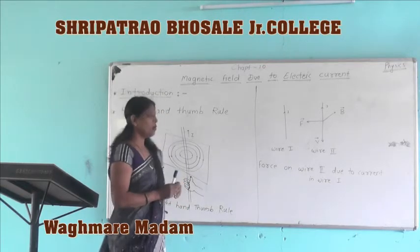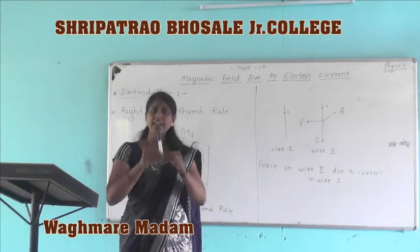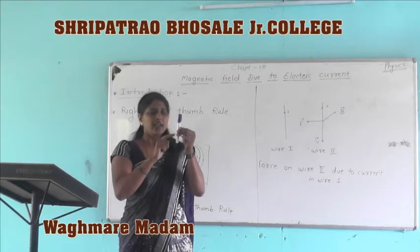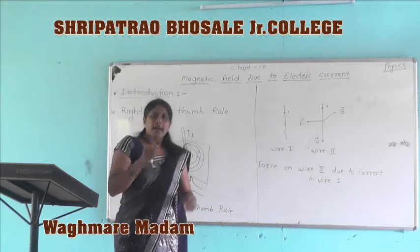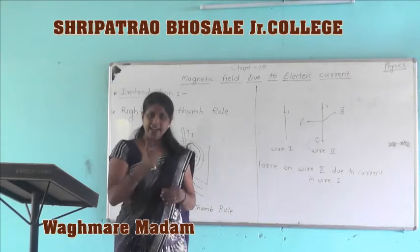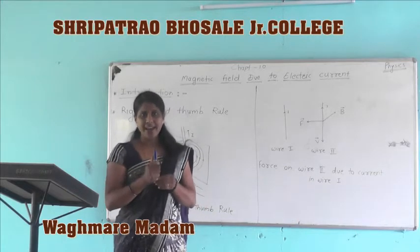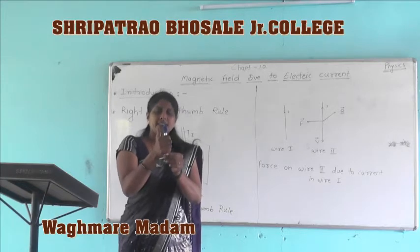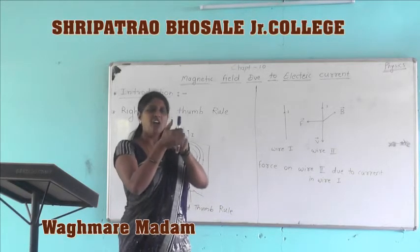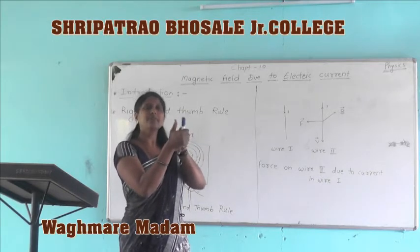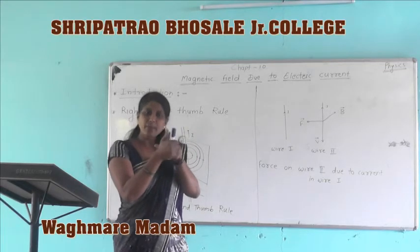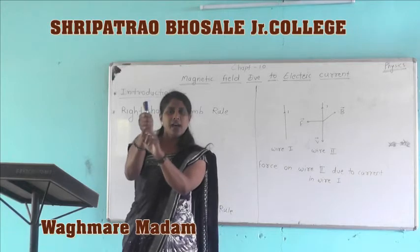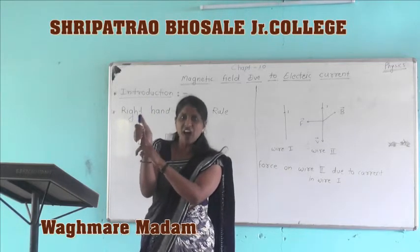Suppose this is a current-carrying conductor and current is passing upward through this conductor. Hold the conductor in your right hand in such a way that the thumb is stretched along the conductor in the direction of current. Then the fingers curled around this conductor indicate the direction of the magnetic field.